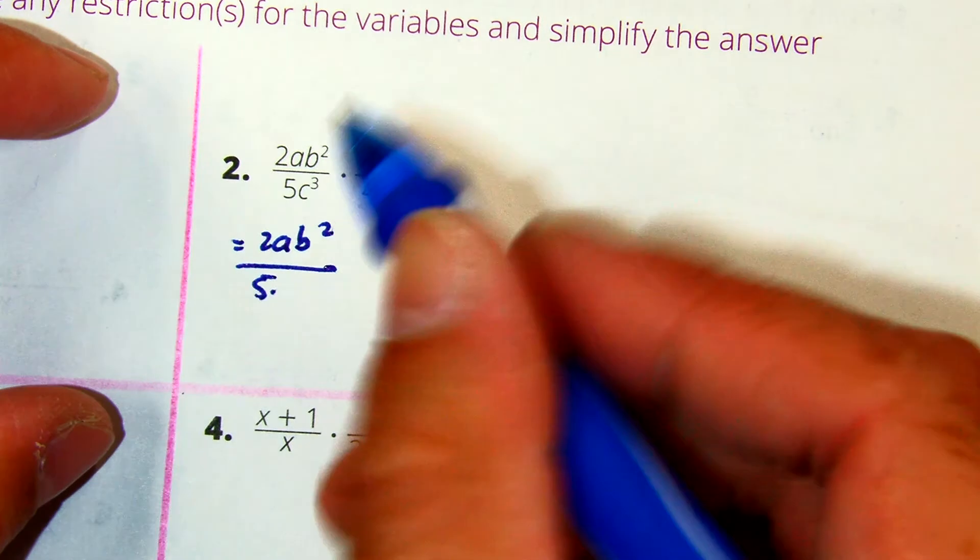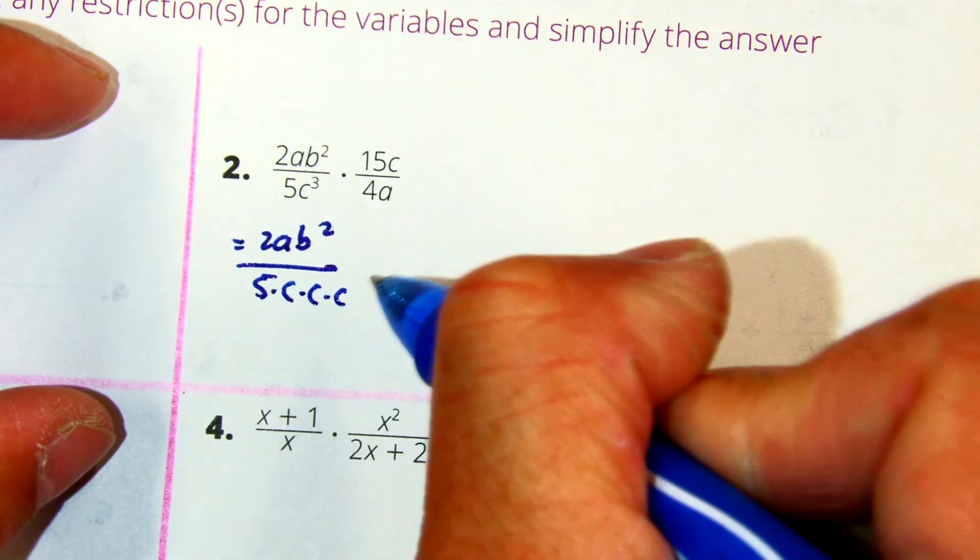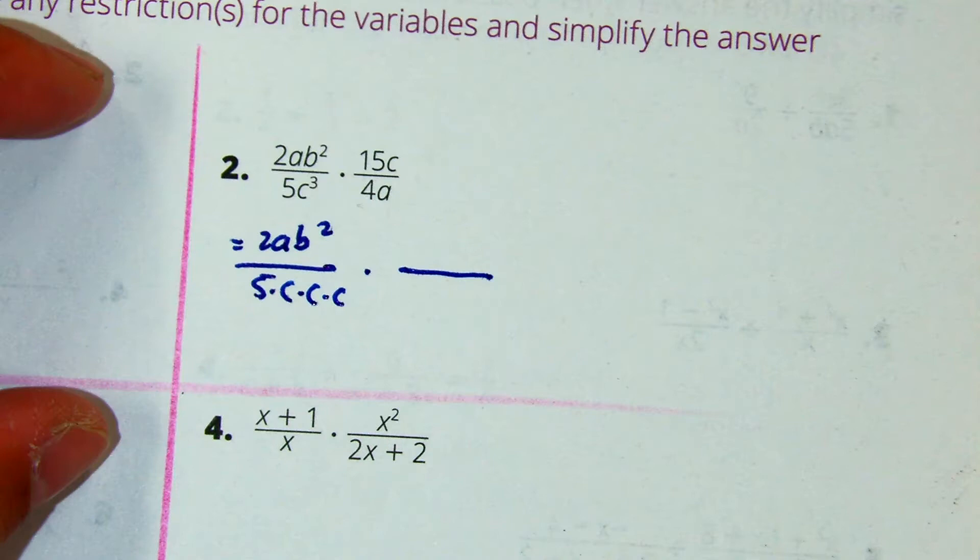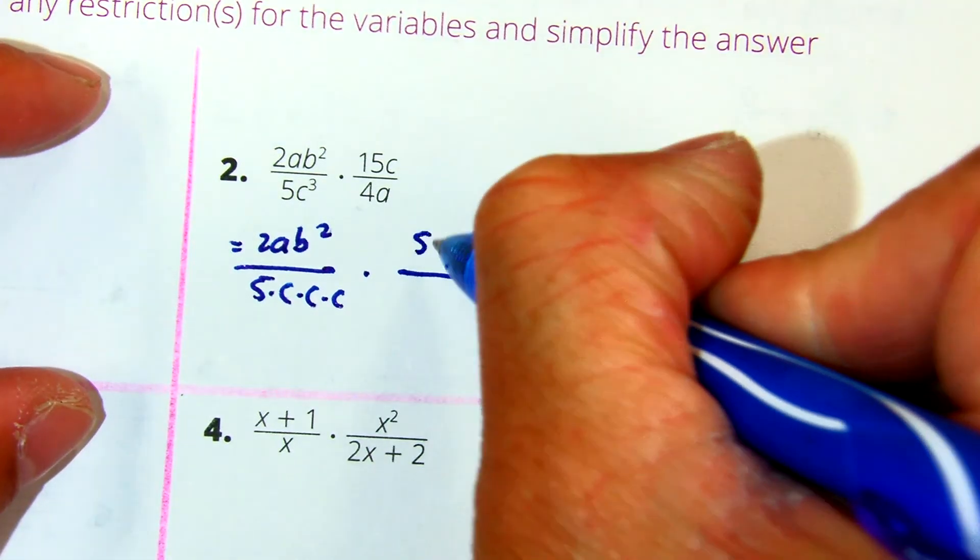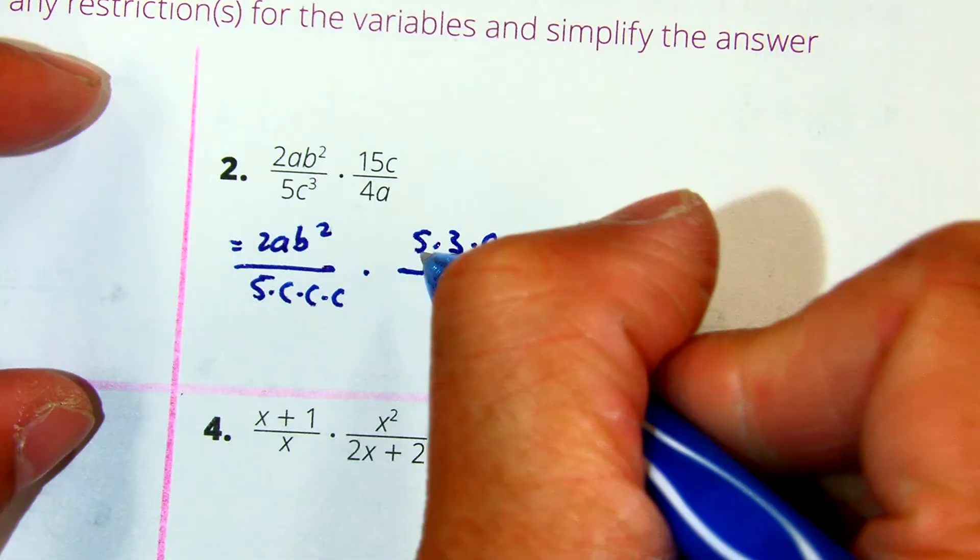How many c's do I have class? 15 is what? And then I have 4 is what?